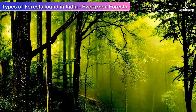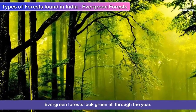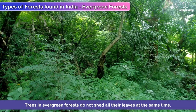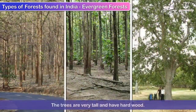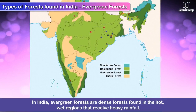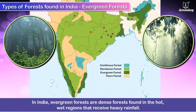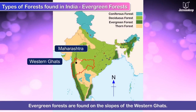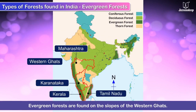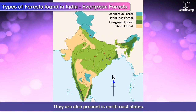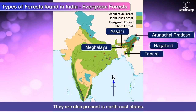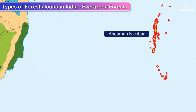Evergreen forests: As the name suggests, evergreen forests look green all through the year. This is because trees in these forests do not shed all their leaves at the same time. The trees are very tall and have hard wood. In India, evergreen forests are dense forests found in the hot, wet regions that receive heavy rainfall. They are found on the slopes of the Western Ghats in Maharashtra, Karnataka, Kerala and Tamil Nadu, as well as in north-eastern states like Assam, Arunachal Pradesh, Meghalaya, Nagaland, Tripura and West Bengal, and in the Andaman and Nicobar Islands.